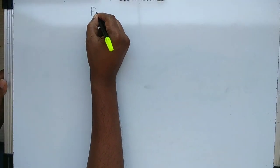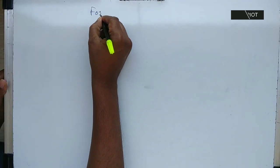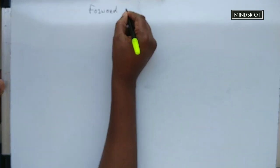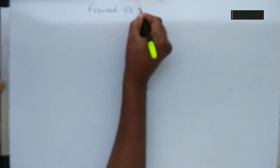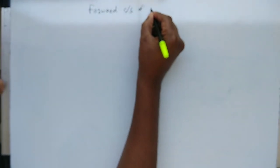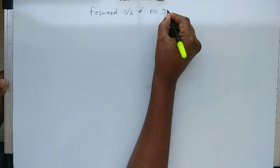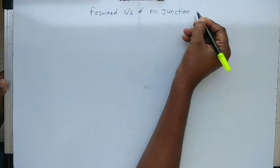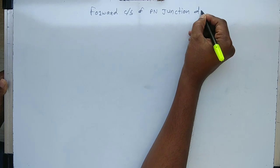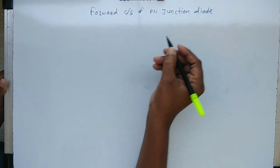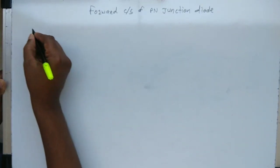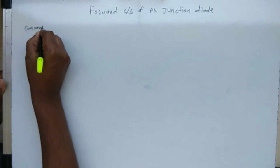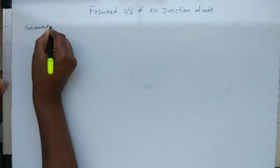In this video we are going to learn forward characteristic of a p-n junction diode. This video is divided into three parts: part one is regarding circuit diagram, part two breadboard connection, and part three is actual experiment.